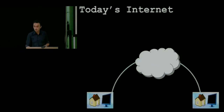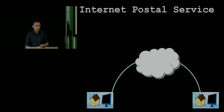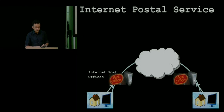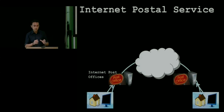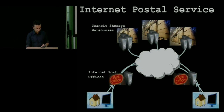Today's internet is very good at routing — connecting point A with point B. But what if we thought about the internet as a postal service? It would require internet post offices: boxes close to the user that the user uploads a large video file to very quickly and then forgets about it. You'd also have transit storage warehouses — big facilities used to schedule information from point A to point B, storing it at different places to minimize the cost of delivery across the network, with intelligence in the middle to sort everything out.